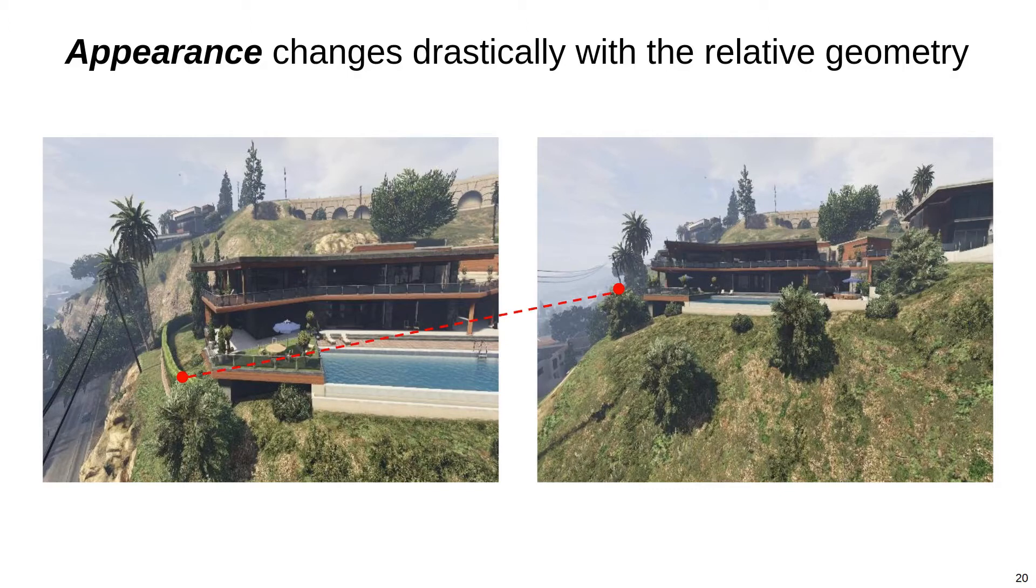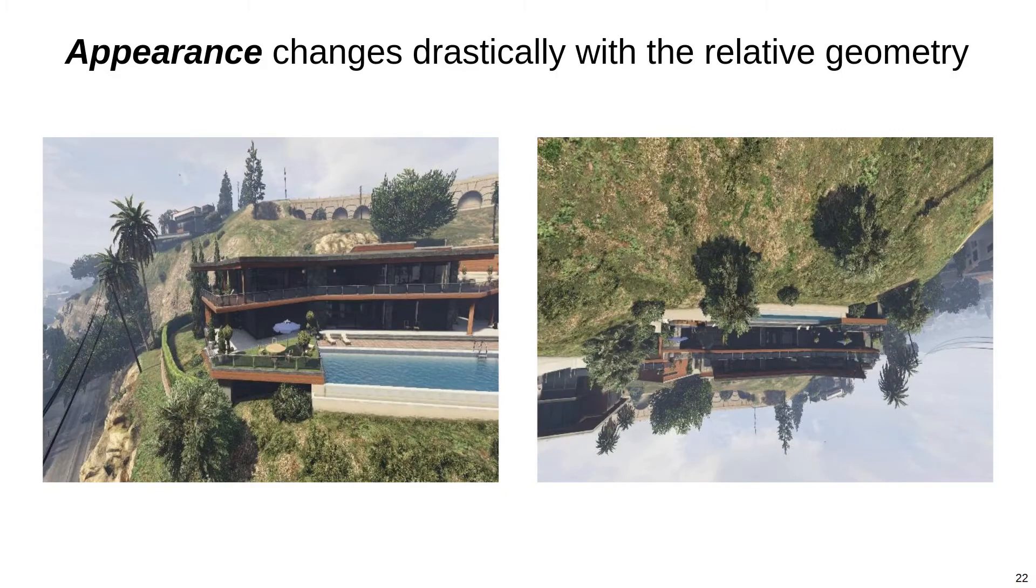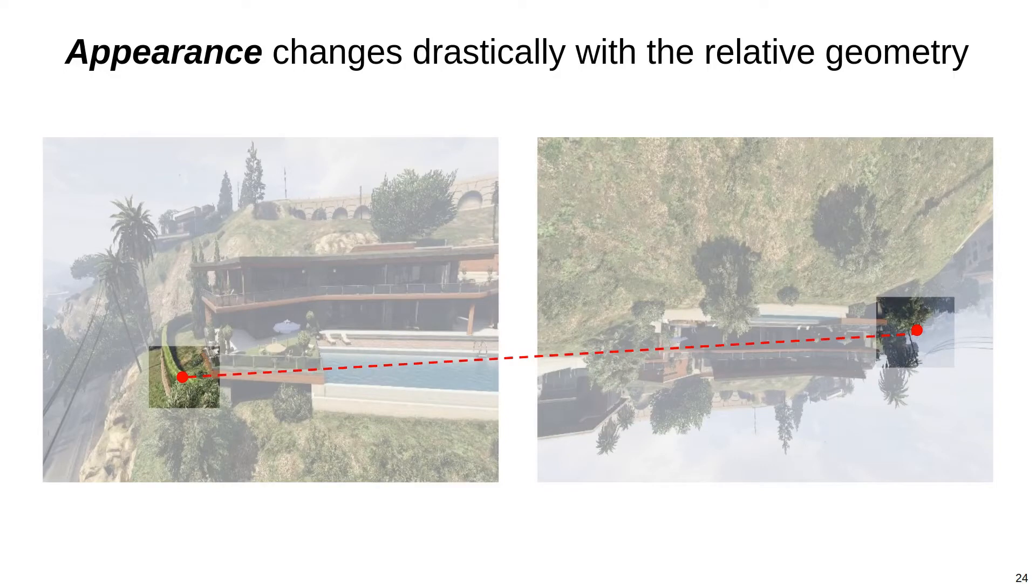Consider this pixel association here. It might take a second for you to convince yourself that these two pixels belong to the same 3D point, given how different the images look. Focusing on the local region around these pixels emphasizes how different the raw color values are. This association task becomes even harder if the cameras are rotated relative to each other. Here is the same pixel association as before.